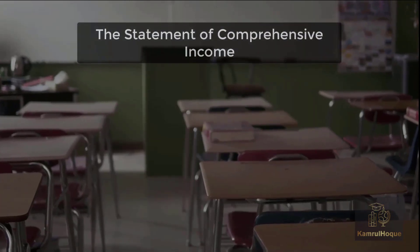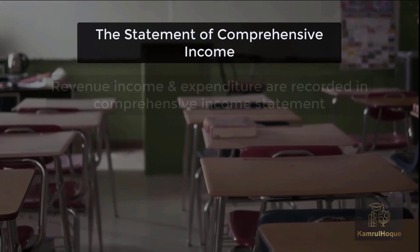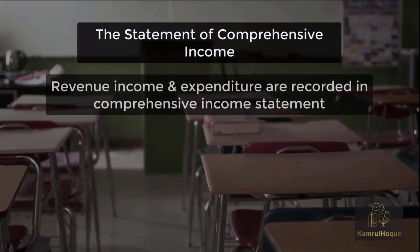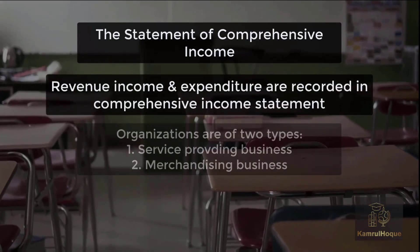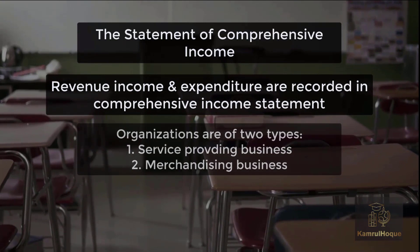First, the statement of comprehensive income. Revenue, income, and expenditure are recorded in the comprehensive income statement — all incomes and all expenses are recorded in this statement. Organizations are of two types: number one, service providing business; number two, merchandising business. Both categories of business prepare a comprehensive income statement in this chapter.